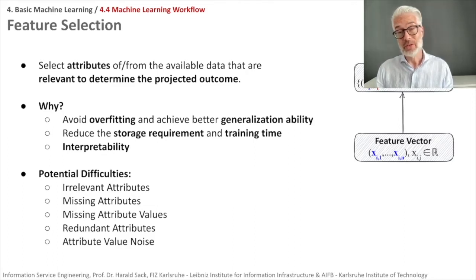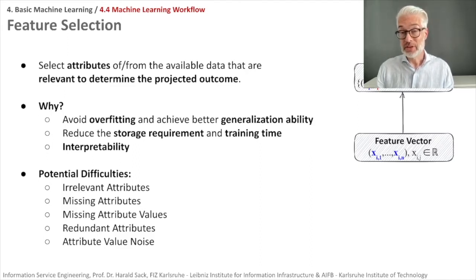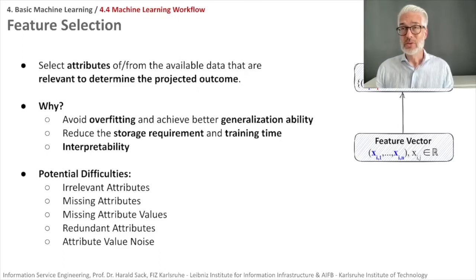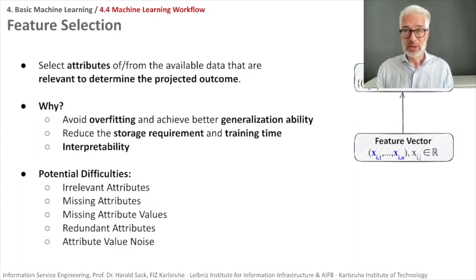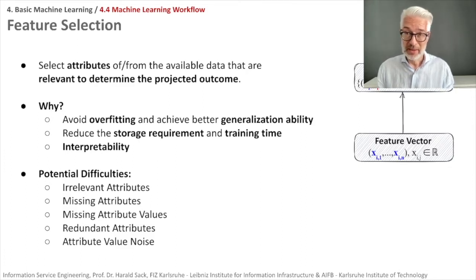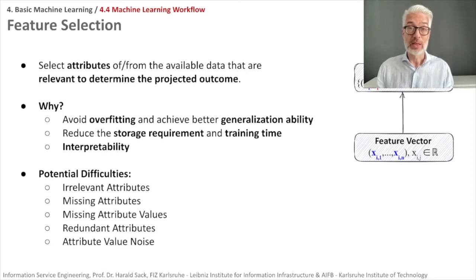If we use all available data, storage requirements increase and the more features we use, the higher the training time of our algorithm. If we use very many features, we also have to invest more work to interpret results and explain which features are responsible for specific decisions. Explainability is nowadays a rather important topic — we want to be able to explain the outcome of machine learning algorithms.